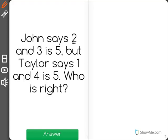John says that 2 and 3 is 5, but Taylor says 1 and 4 is 5. Who is right?